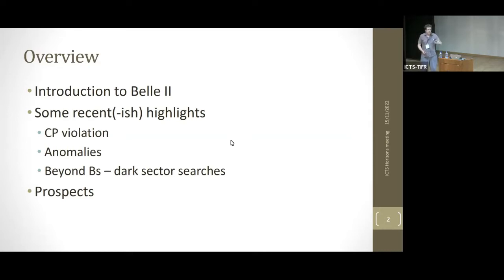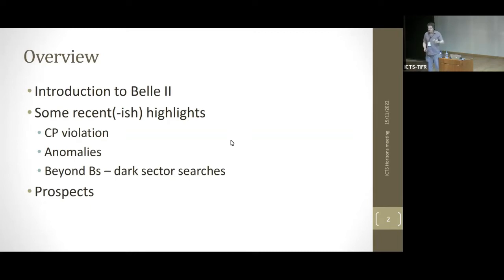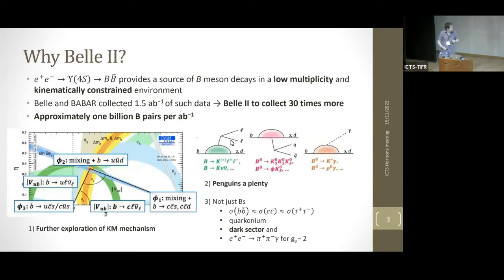Then I'll talk about a few recent highlights — we're a running experiment producing results, so I'll give just three examples: one related to CP violation, one related to the anomalies that Rukmini talked about just before the tea break, and one measurement from a search in the dark sector, before concluding with prospects. So why Belle II?